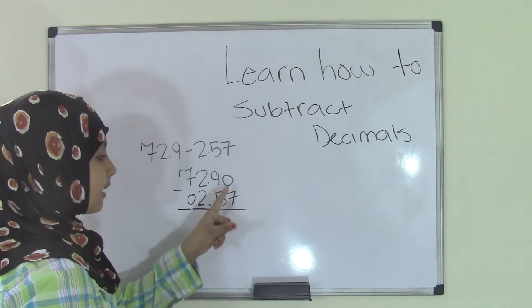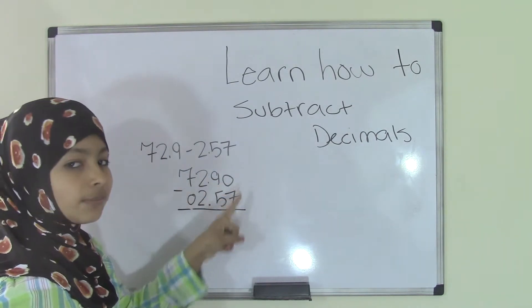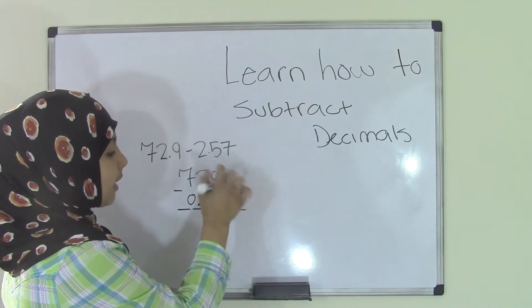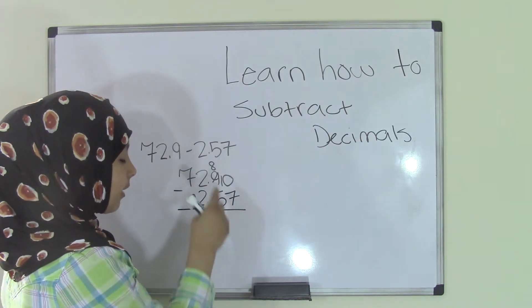Now, since you can't subtract 7 from 0, you'll borrow 1 from 9. So now that became a 10, and now here you'll have 8 left, sorry.